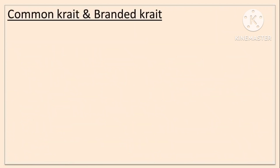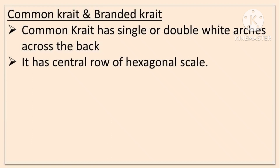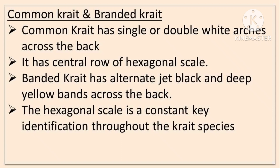Common Krait and Banded Krait come under Elapids. Common Krait has single or double white arches across the body and a central row of hexagonal scales. Banded Krait has alternate jet black and deep yellow bands across the back. The hexagonal scale row is a constant key identification feature throughout Krait species.